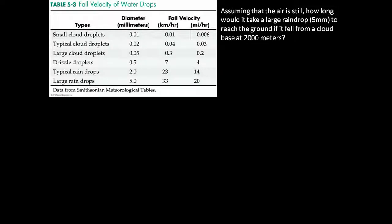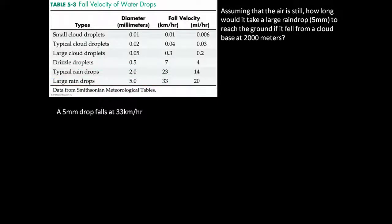Well, again, we're going to turn to the table that contains the velocities for different diameters of cloud droplets. A 5 millimeter drop falls at 33 kilometers per hour, which can also be expressed as 33,000 meters per hour, because one kilometer is the same as 1,000 meters — therefore 33 kilometers is 33,000 meters.